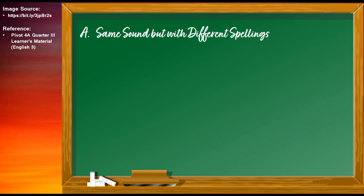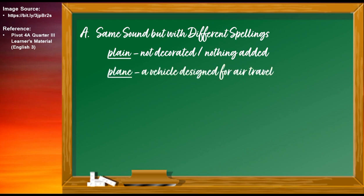We have words having the same sound but with different spellings. For example, the words PLAIN and PLANE. The first word PLAIN, spelled as P-L-A-I-N, means not decorated or nothing added. While the second word PLANE, spelled as P-L-A-N-E, means a vehicle designed for air travel. The words PLAIN and PLANE are both homonyms.